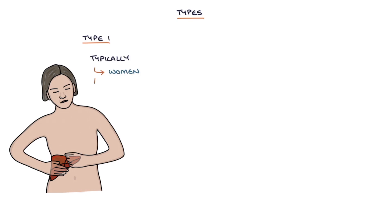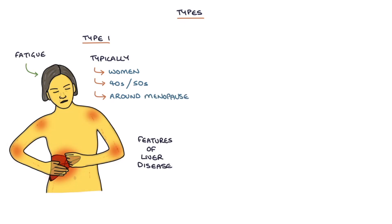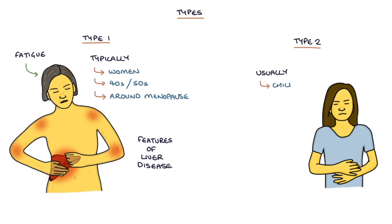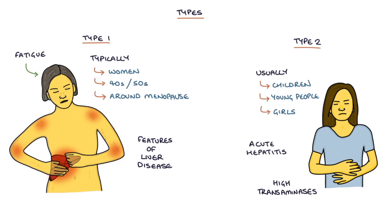There are two types of autoimmune hepatitis with different age distributions and autoantibodies. Type 1 typically affects women in their late 40s or 50s. It presents around or after menopause with fatigue and features of liver disease on examination, and takes a less acute course than type 2. Type 2 usually affects children or young people, more commonly girls, and presents with acute hepatitis with high transaminases on blood tests and jaundice, or yellowing of the skin.